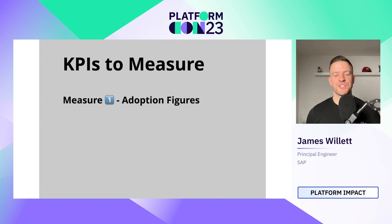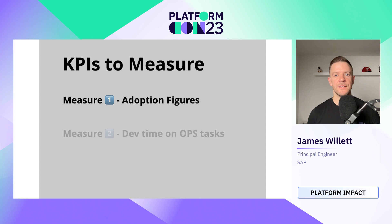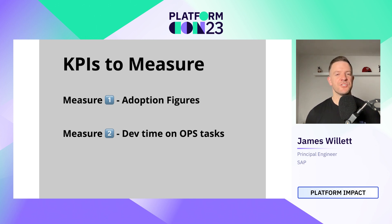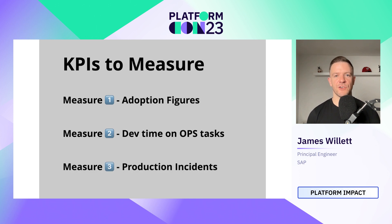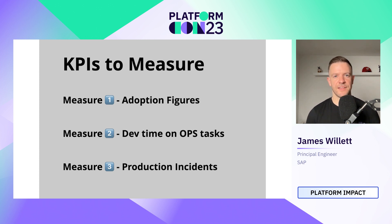Just before I finish, I want to talk about the key KPIs we're using to measure success. First, we simply track adoption figures — the number of teams that have adopted our different services. We also track the amount of time developers spend on ops tasks, using surveys and JIRA labels to measure this before and after platform features are adopted. We also track production incidents — the number of incidents and mean time to resolution — before and after our platform features have been adopted.